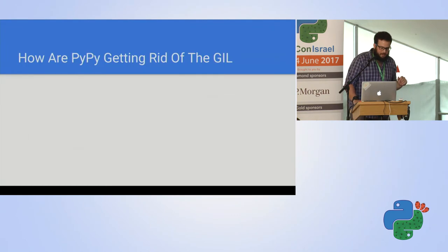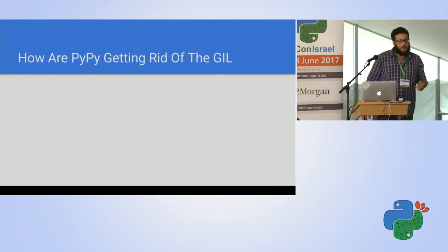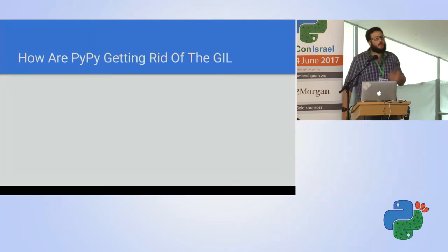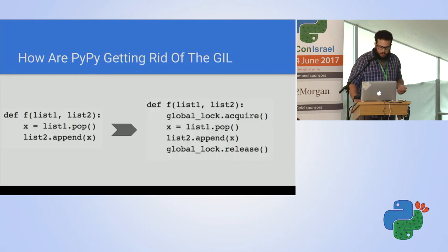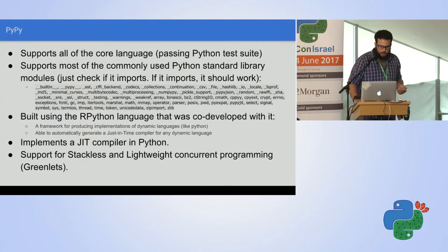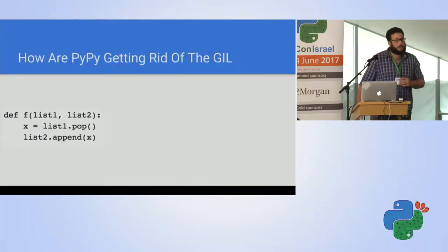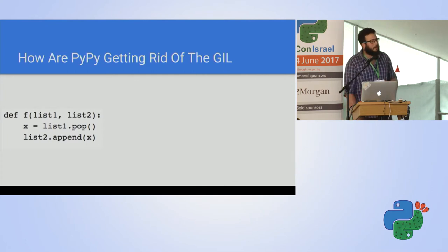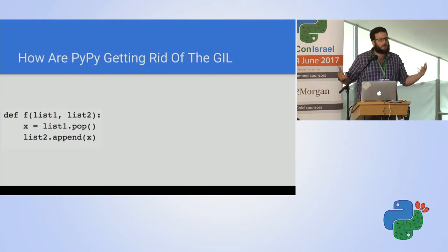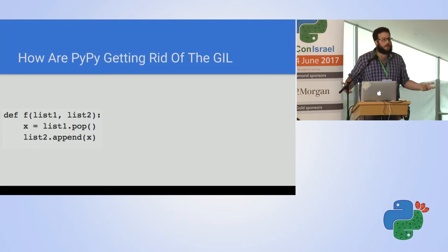PyPy still has a GIL. Even though it uses the JIT compiler, it still uses the GIL, so concurrent threads don't actually execute concurrently.